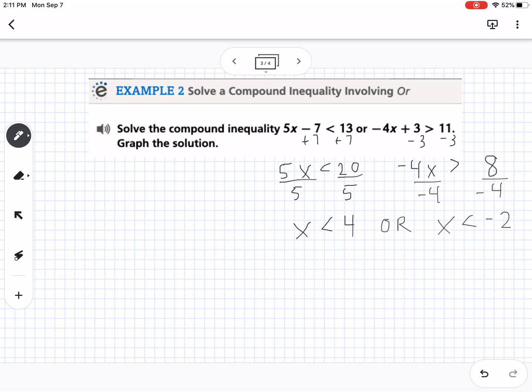So we write or between them. So that is our final answer. And then with inequalities, just like on the last one, we usually want to graph these. So I'm going to put, here's four and here's negative two.